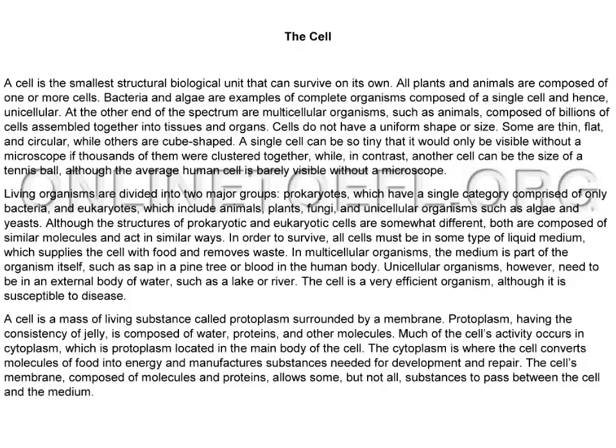Some are thin, flat, and circular, while others are cube-shaped. A single cell can be so tiny that it would only be visible without a microscope if thousands of them were clustered together. While in contrast, another cell can be the size of a tennis ball, although the average human cell is barely visible without a microscope.